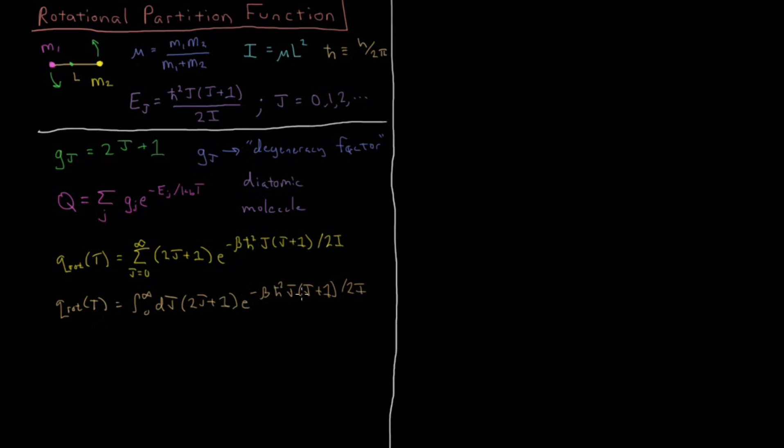In order to evaluate this integral, we're going to do a substitution. That substitution is that x is going to be j times j plus 1, as we see up in the exponent. Then, taking the differential of that, dx is going to be 2j plus 1.